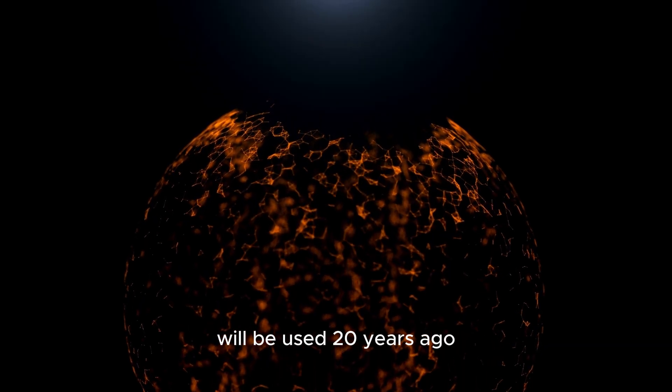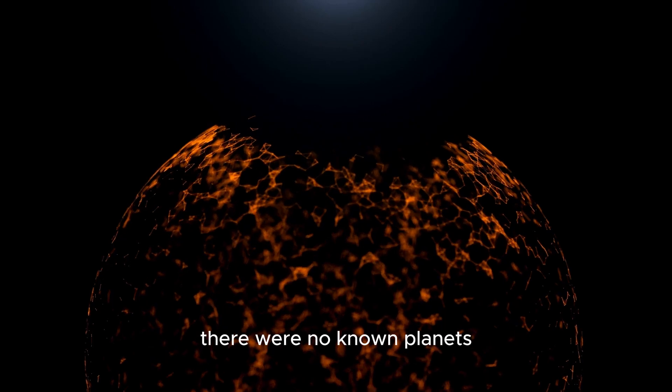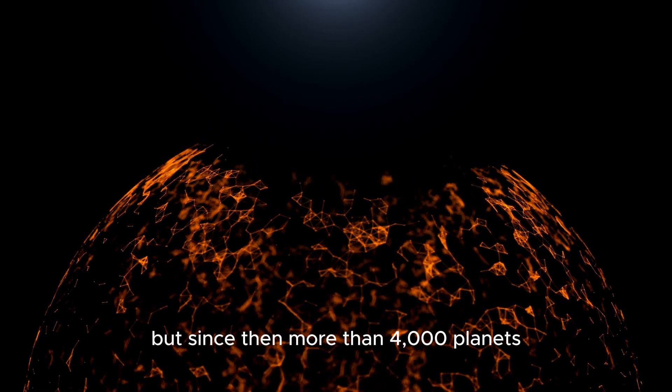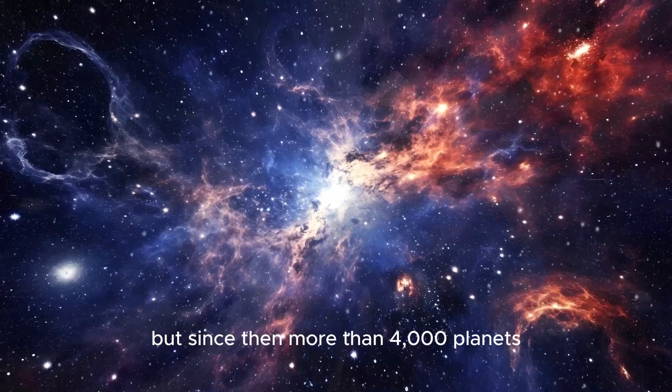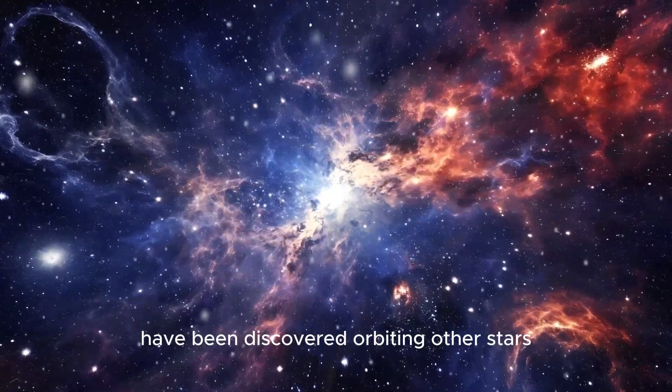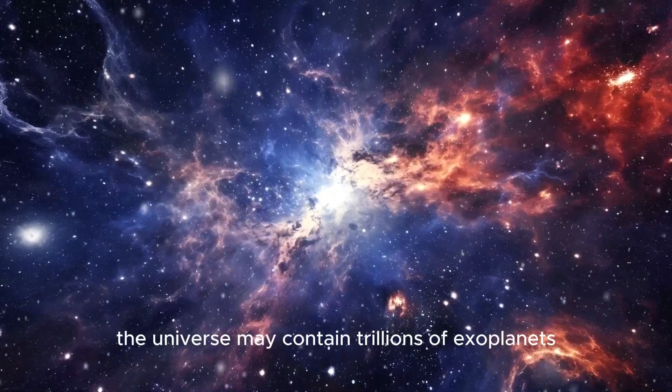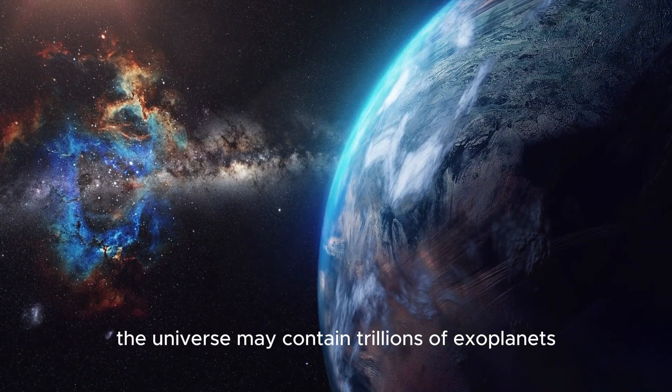Twenty years ago, there were no known planets outside those in our solar system. But since then, more than 4,000 planets, also referred to as exoplanets, have been discovered orbiting other stars. According to NASA, the universe may contain trillions of exoplanets.